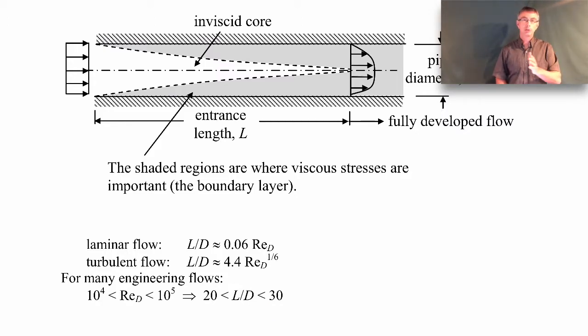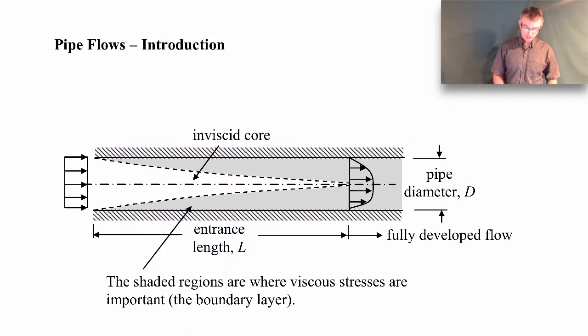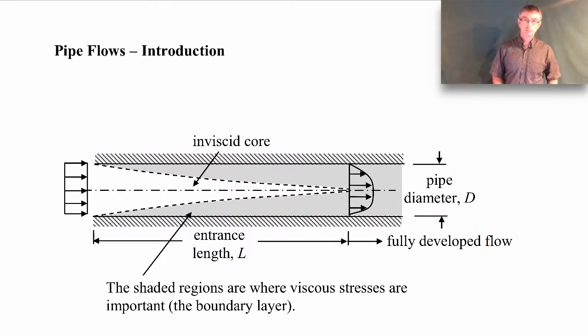So you have to go about 20 to 30 pipe diameters from the inlet before you get to the fully developed region. Our analysis with pipe flows is really going to focus on that fully developed flow region. And we won't worry about the entrance length. I just wanted to let you know that there really is an entrance length.